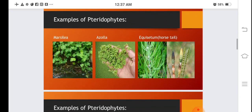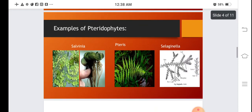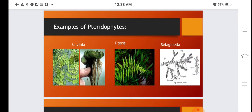These are some examples of pteridophytes. In these images you can see different pictures of pteridophytes: Marsilea, Azolla, Equisetum which is also known as horsetail, Salvinia, Pteris, and Selaginella.